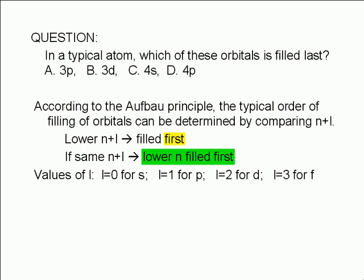We need to remember that the orbital quantum numbers are 0 for an s orbital, 1 for a p orbital, 2 for a d orbital, and 3 for an f orbital. The principal quantum number is the number in the name of the orbital. n equals 3 for 3p and 3d, and n equals 4 for 4s and 4p.